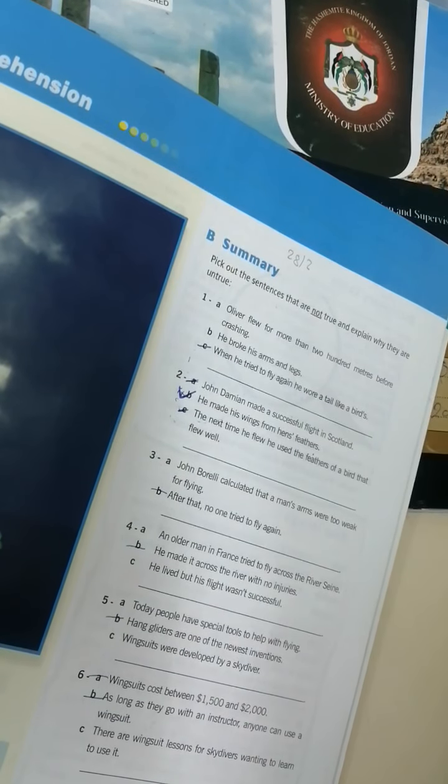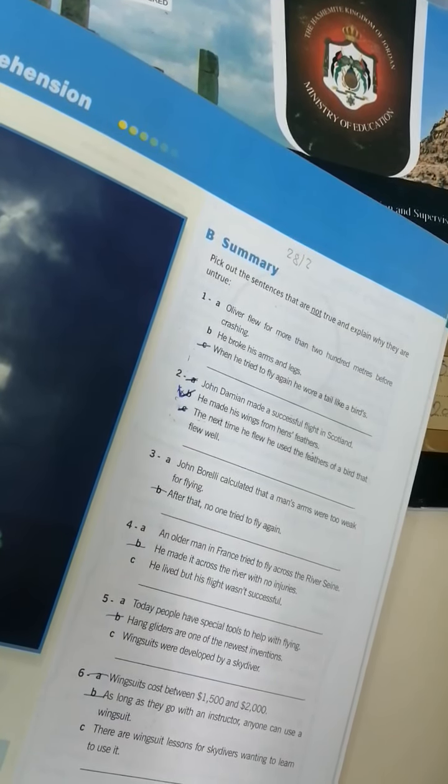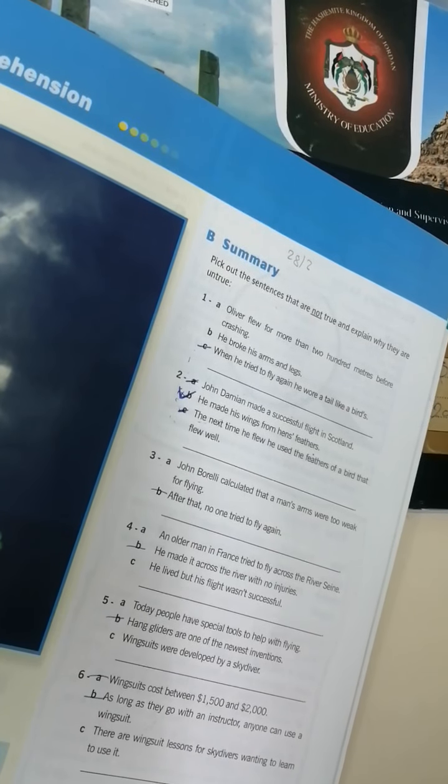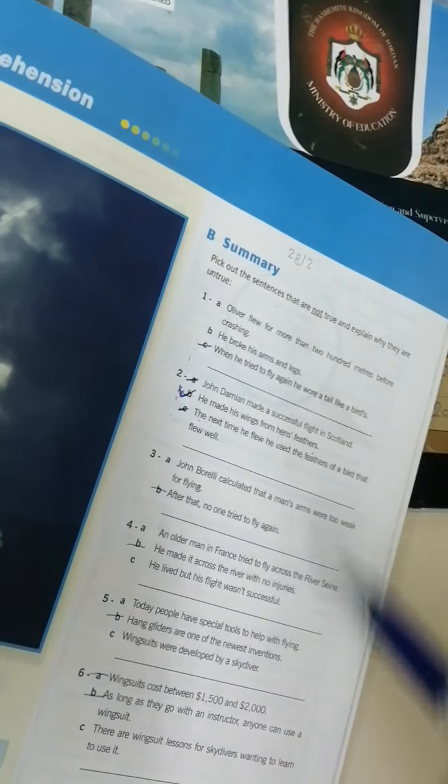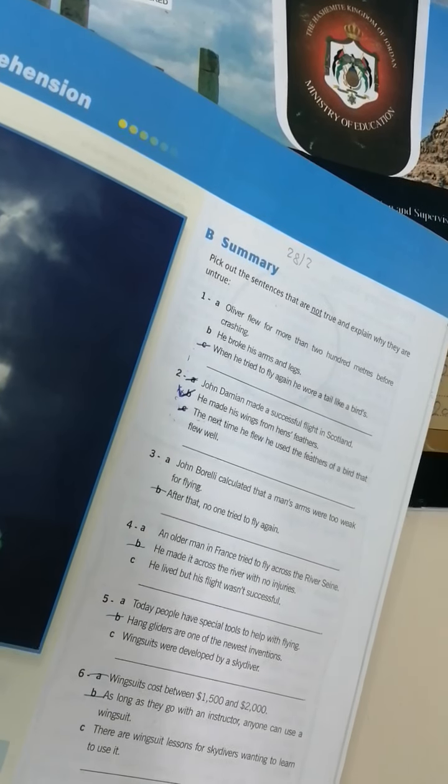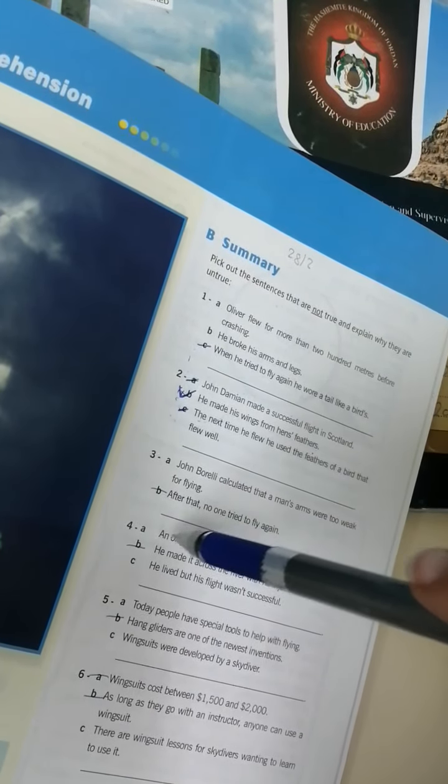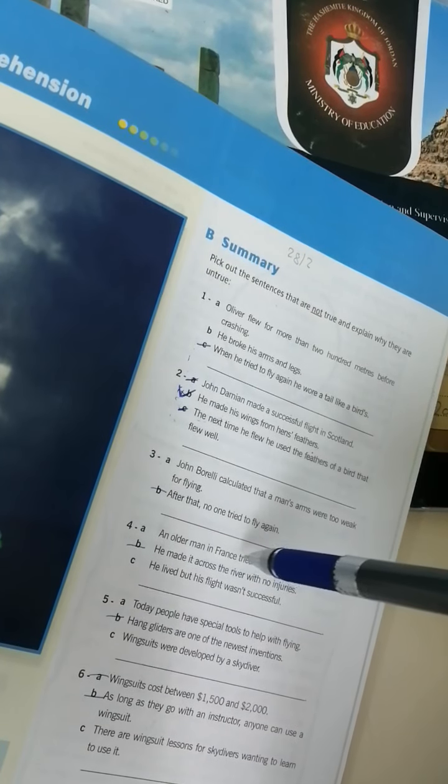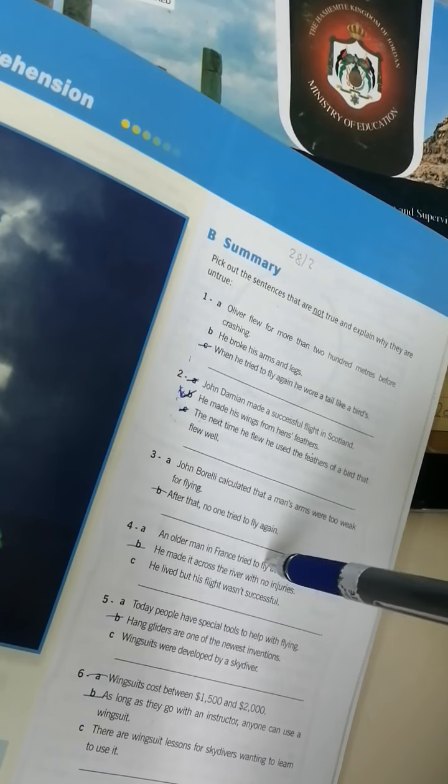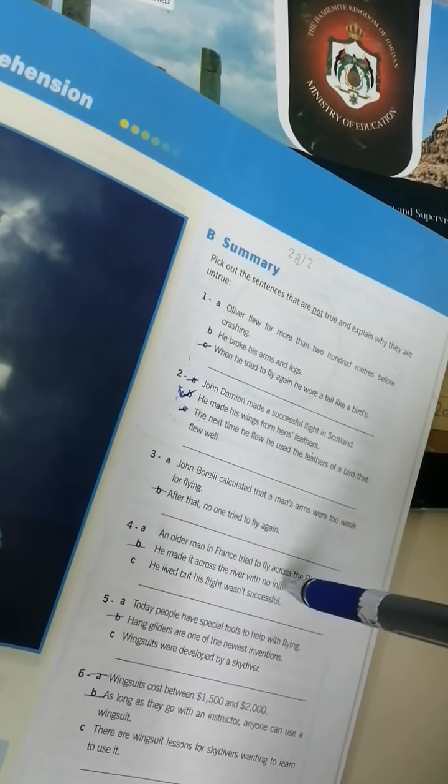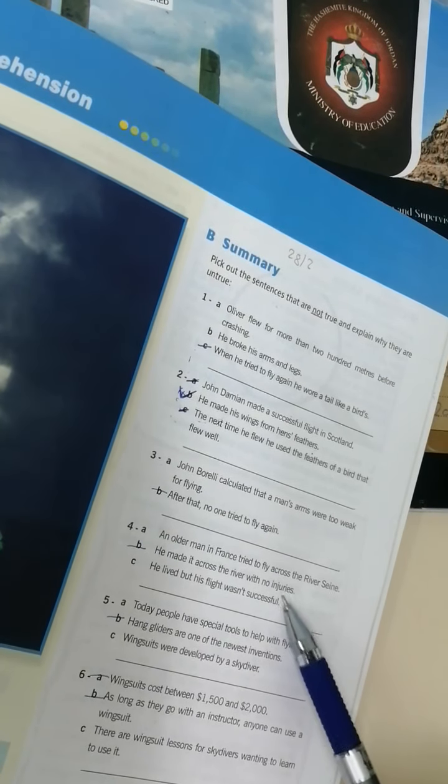Three: John Bordley calculated that a man's arms were too weak for flying. انو ادين الشخص بكونوا ضعاف للطيران صح. After that no one tried to fly again. بعد هيك ما حدا حاول انو يطير غلط. Four: An older man in France tried to fly across the river Seine. زلم كبير حاول انو يطير. He made it across the river with no injuries. ما من دون اي اصابات غلط. معناته B انا عندي اياها غلط.